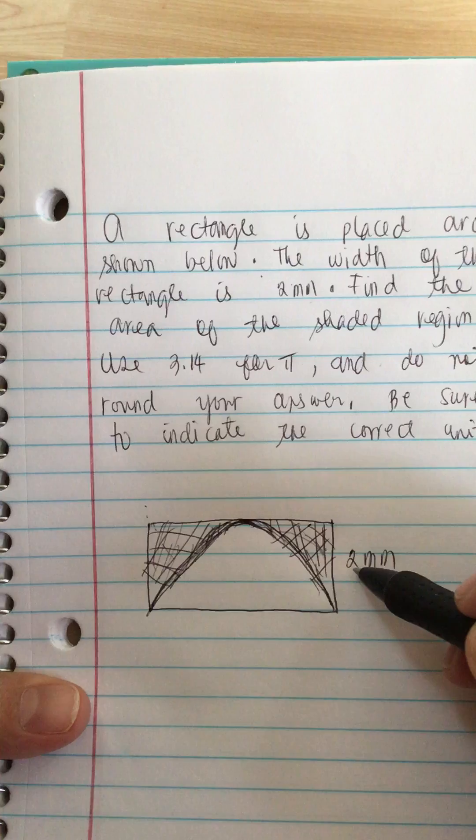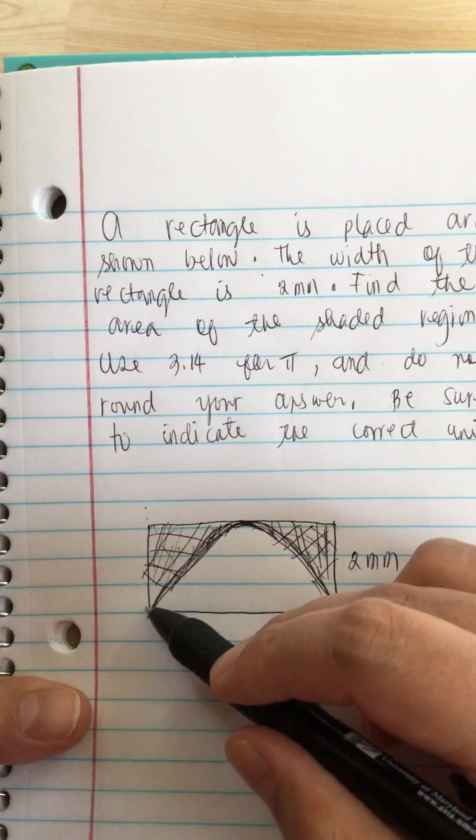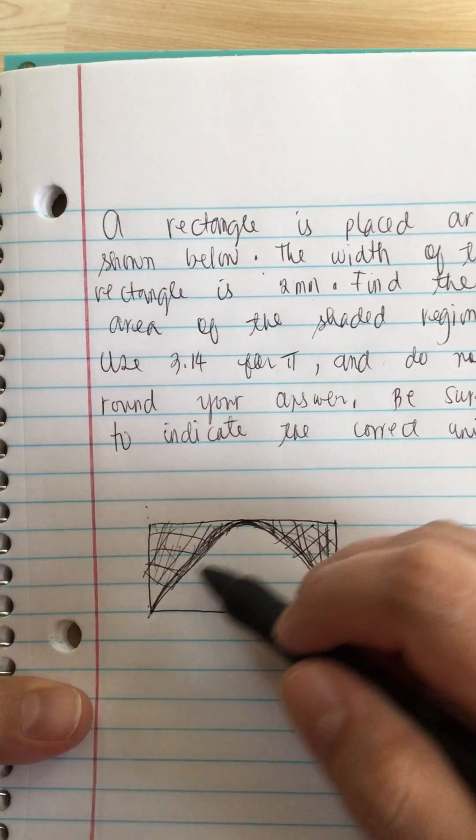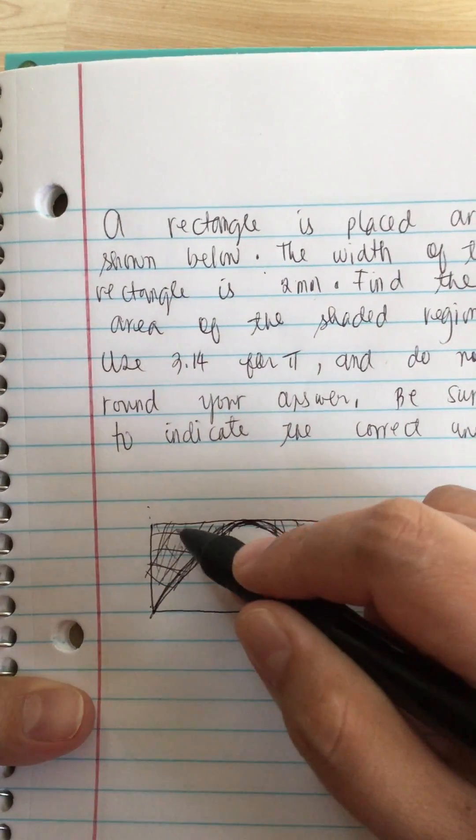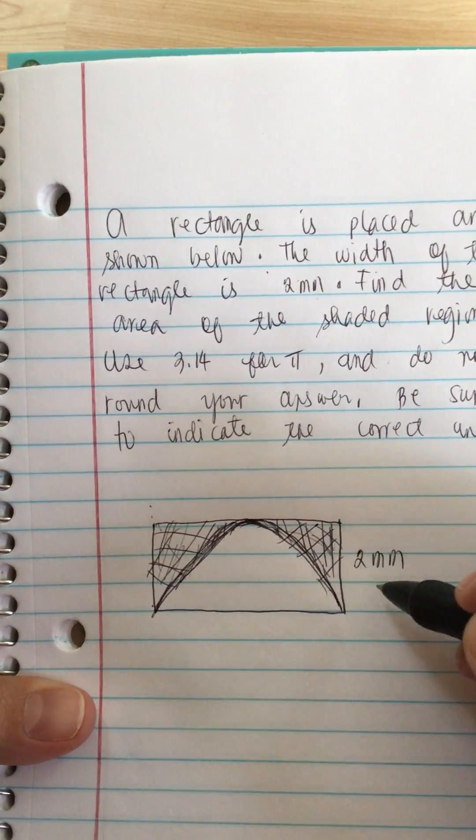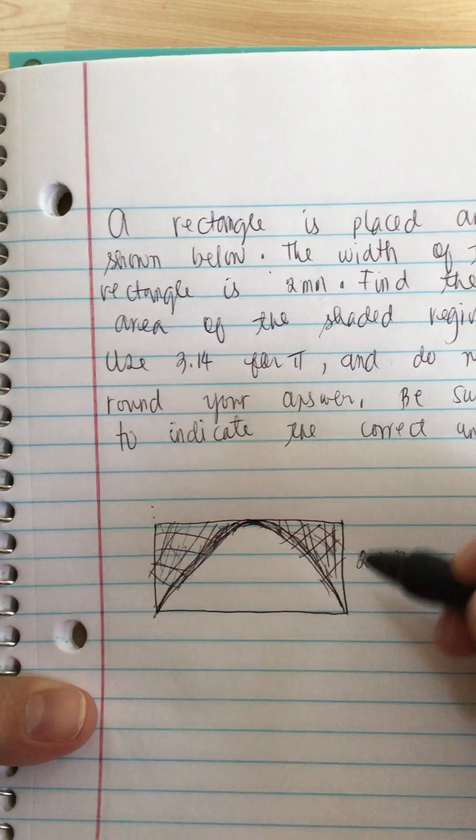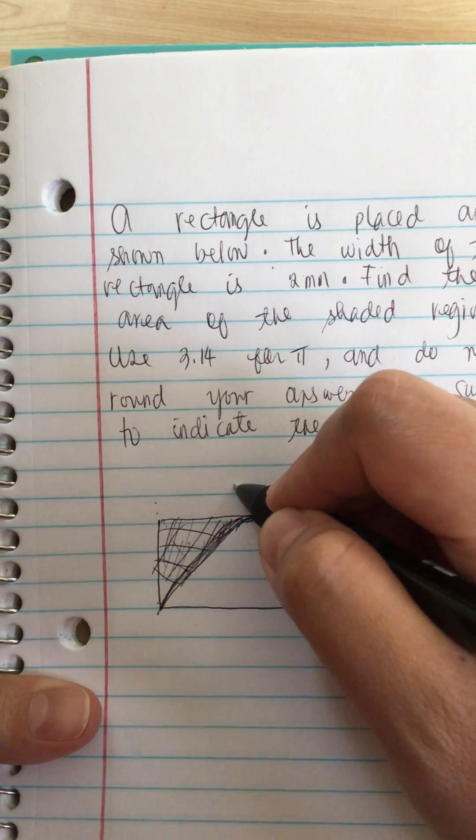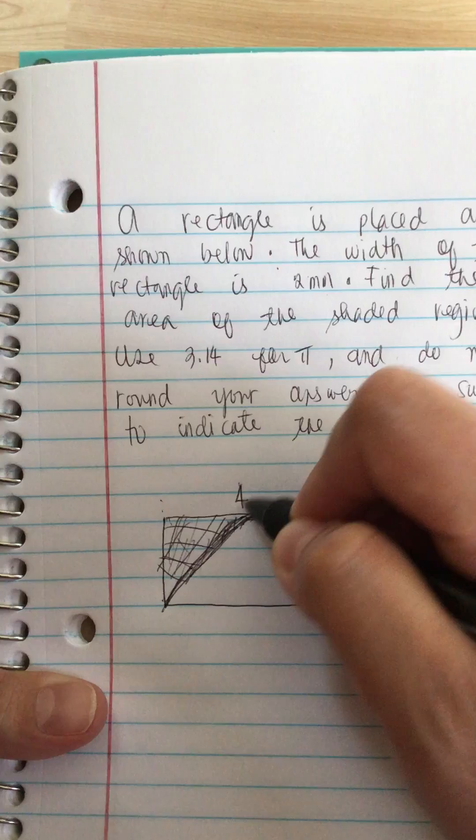And if this is 2mm, since it is a semicircle, then this means that the length is twice the width. So this means that this is 4mm.